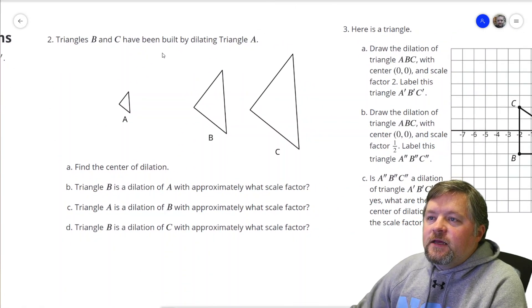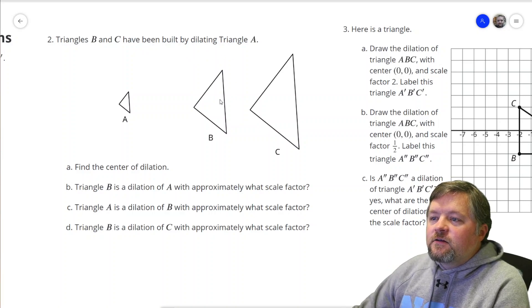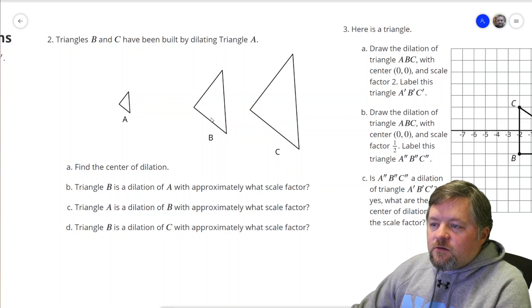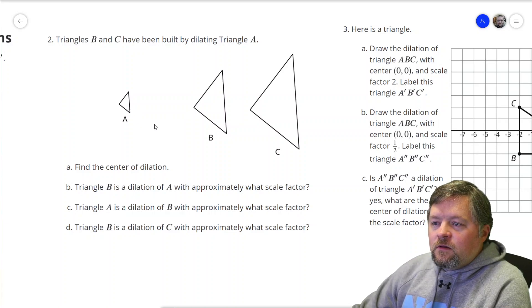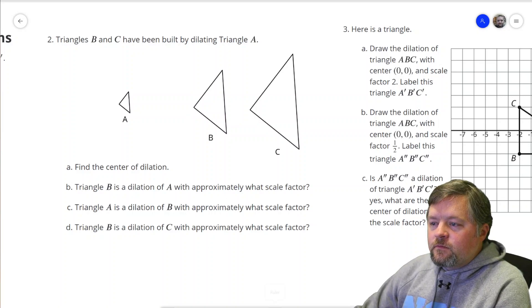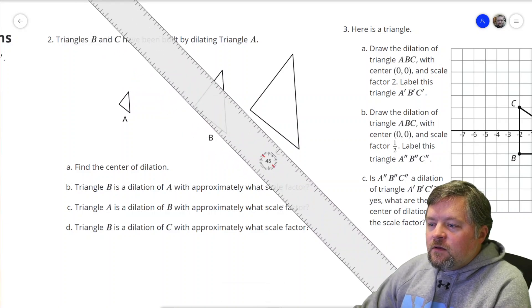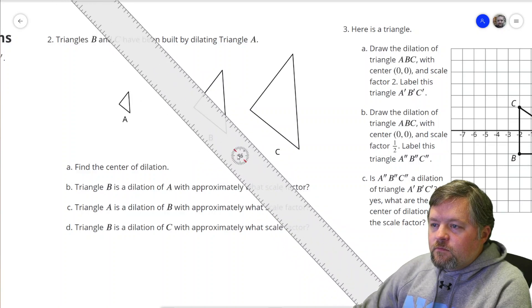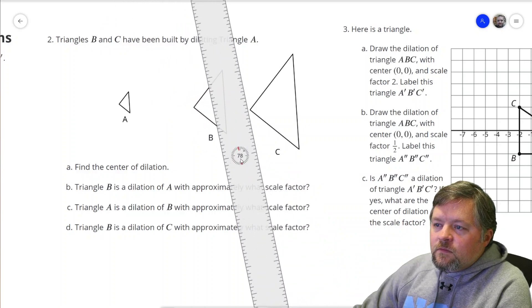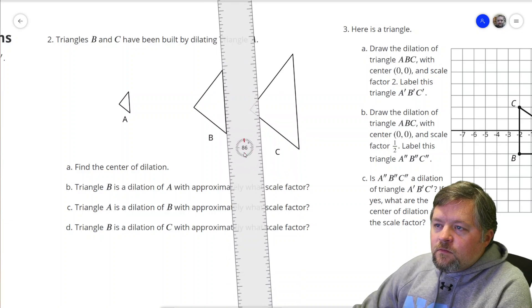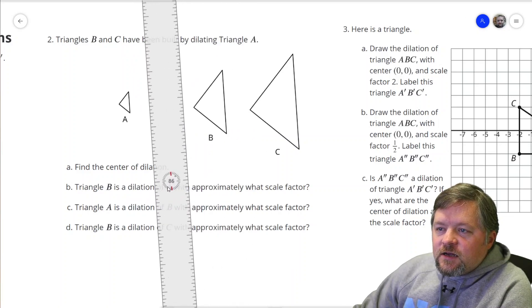Okay, triangles B and C have been built by dilating triangle A. B and C come from dilating triangle A. Triangle B is a dilation of A with approximately what scale factor. Okay, that looks pretty good. B is a dilation of A.